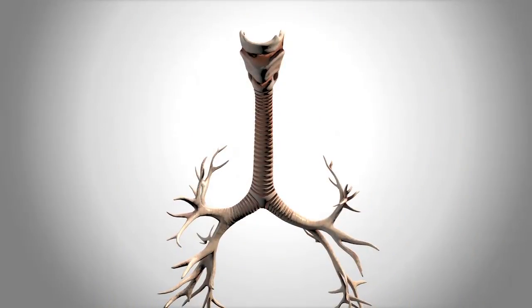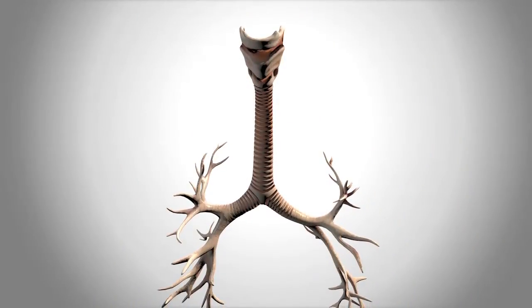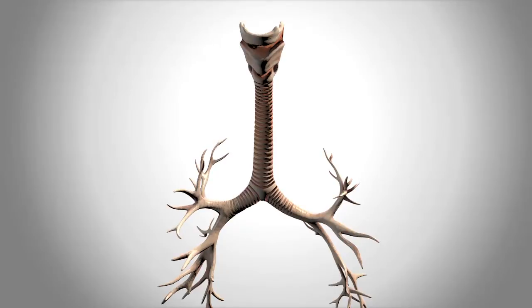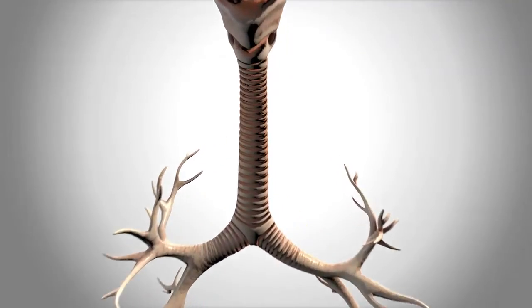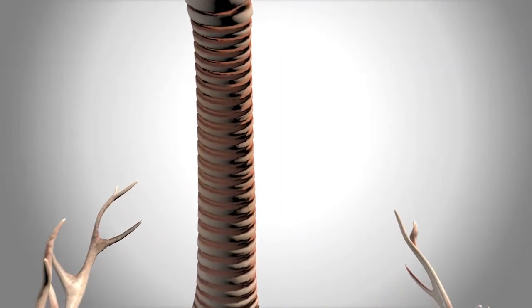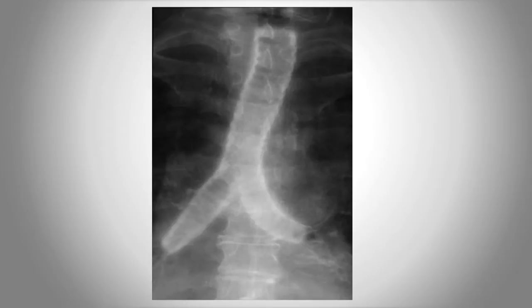The trachea is a corrugated tube, similar to the tubes used for wiring a home theater system, only with cartilaginous rings. These rings hold the trachea open when we create negative intrathoracic pressure to breathe air. In the frontal or coronal plane, the trachea can be identified by its shape, which looks remarkably like a lambda, the Greek letter L.